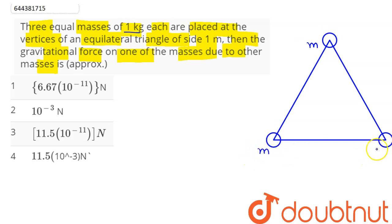This is an equilateral triangle of side 1 meter, means here this angle will be 60 degrees. Now since gravitational force is given by the formula F equals G m1 m2 divided by r square, and it is an attractive force.